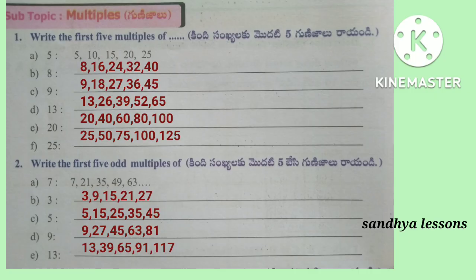Second Roman: Write the first 5 odd multiples of the given numbers. First 5 odd multiples of 3 are 3, 9, 15, 21, 27. First 5 odd multiples of 5 are 5, 15, 25, 35, 45. First 5 odd multiples of 9 are 9, 27, 45, 63, 81. First 5 odd multiples of 13 are 13, 39, 65, 91, 117.